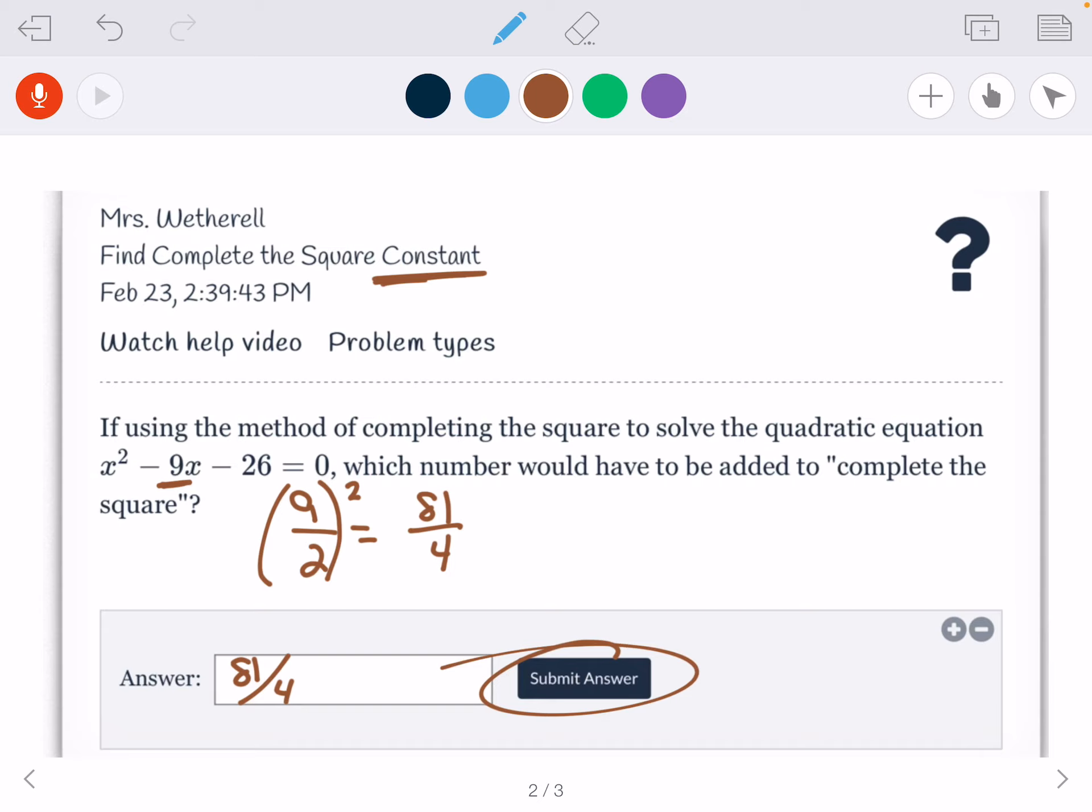Now if you did it and got a decimal, you would have to square your decimal and then enter your decimal. You can do it either way you want. I'm just doing it the fraction way.